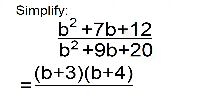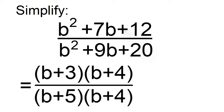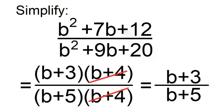b squared plus 9b plus 20 is also a general trinomial with a equals 1. To factor, think of two numbers that will give you a product of 20 and a sum of 9. The factors are b plus 5 and b plus 4. Divide out b plus 4. The answer is b plus 3 over b plus 5.